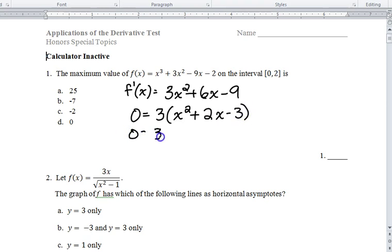Pretty simple trinomial factoring here. That would be x plus 3, x minus 1. So 0 doesn't equal 3. We get x equals negative 3, and we get x equals 1 for our critical numbers.